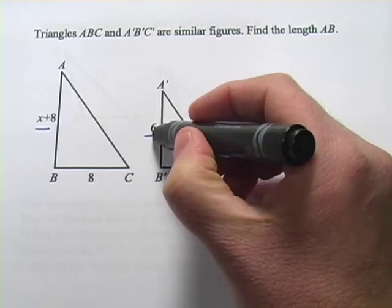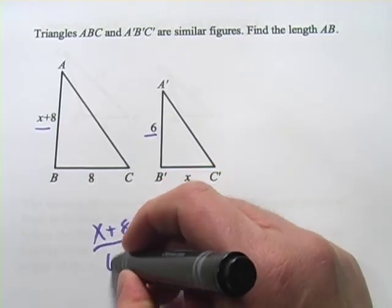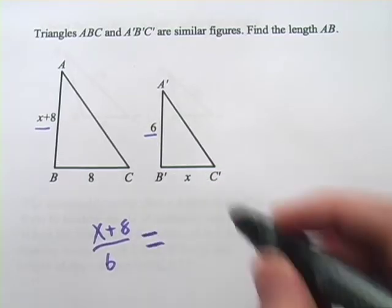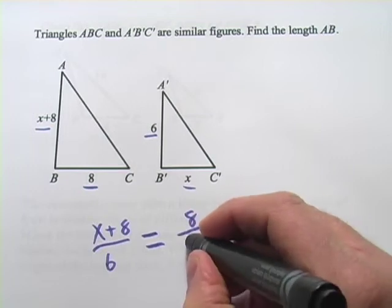8 plus X, the corresponding side here would be 6. So I'm going to say 8 plus X is to 6 as, and then the other sides we have are 8 and X, as 8 is to X.